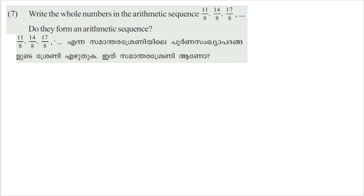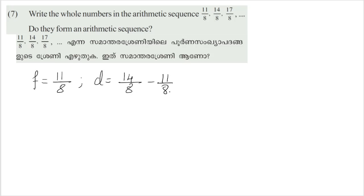If we get a multiplication, we can get a whole number. The first term is 10 by 8. What is the common difference d? We have 14 by 8 and 15 by 8. The denominators are the same, so we just subtract the numerators and keep the same denominator. Numerator subtracted gives 3, so d equals 3 by 8. This is the common difference.